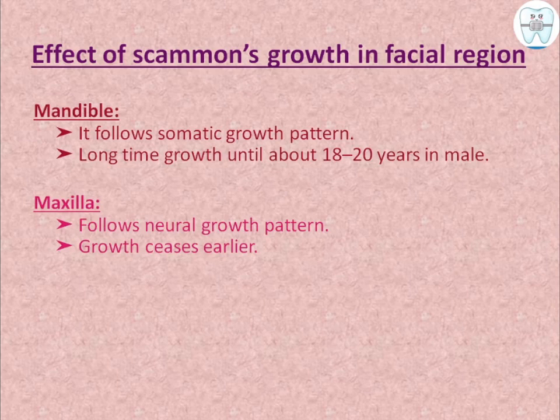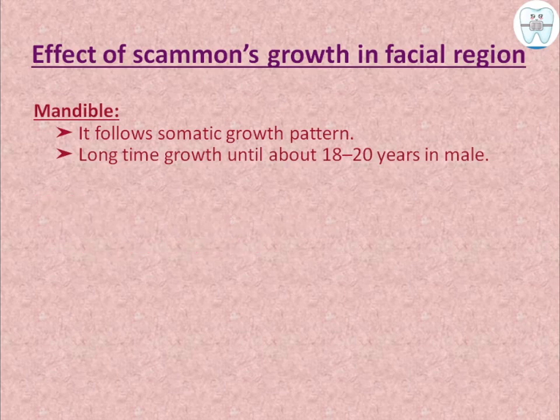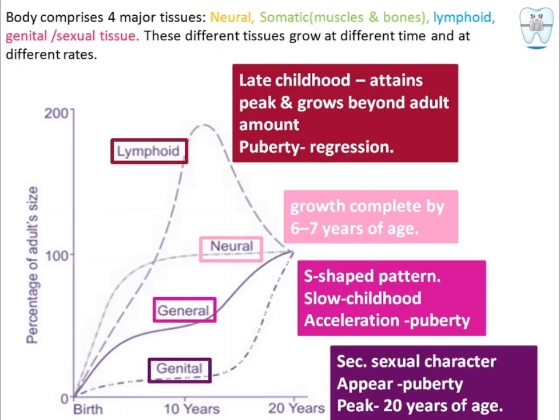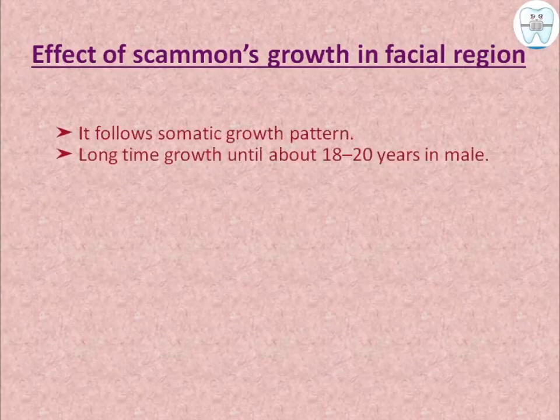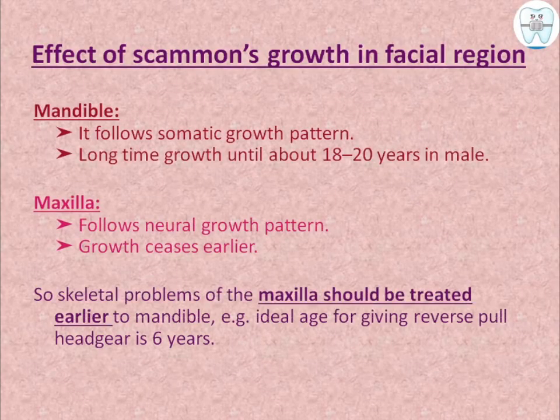The maxilla follows the neural growth pattern, meaning its growth is already finished by 6 to 7 years of age. Therefore, skeletal problems of the maxilla should be treated earlier than those of the mandible. For example, the ideal age for giving reverse pull headgear is 6 years.